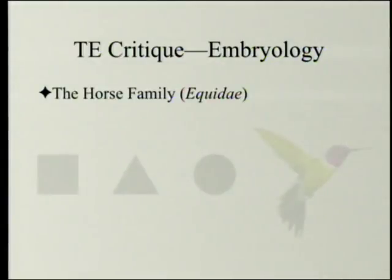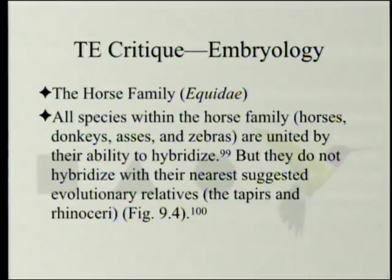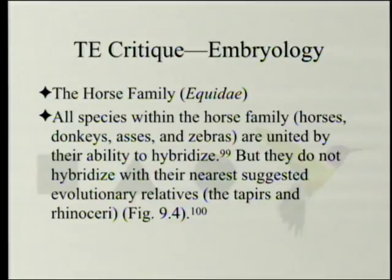Those who have heard of baraminology are probably perking their ears up. All species within the horse family — horses, donkeys, asses, and zebras — are united by their ability to hybridize, but they do not hybridize with the nearest suggested evolutionary relatives, the tapirs or the rhinoceri.